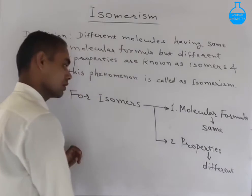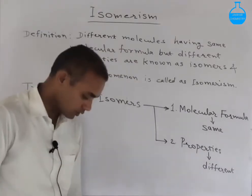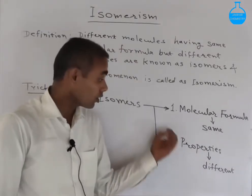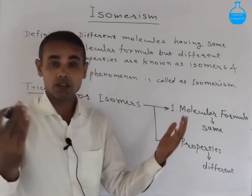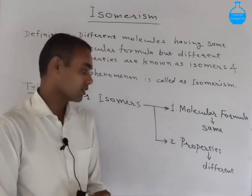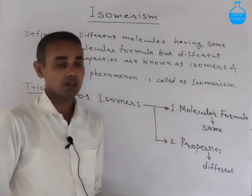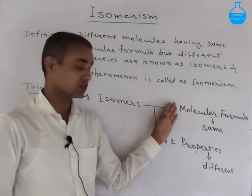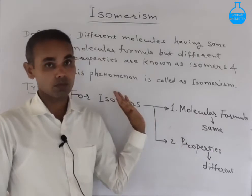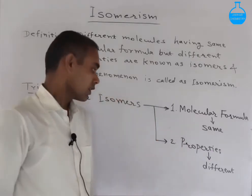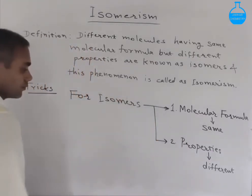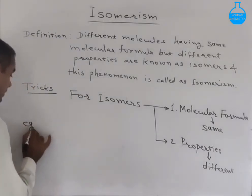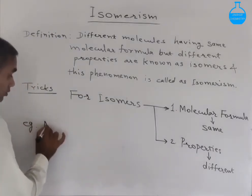Point number two is properties — properties should be different for different molecules to be isomers. If you talk about the properties, we can take all properties like chemical properties and physical properties. We can say some properties may be different, or at least one property must be different for different molecules to be isomers.